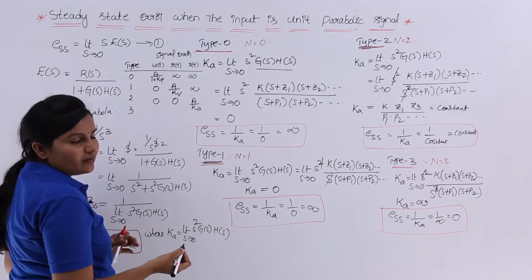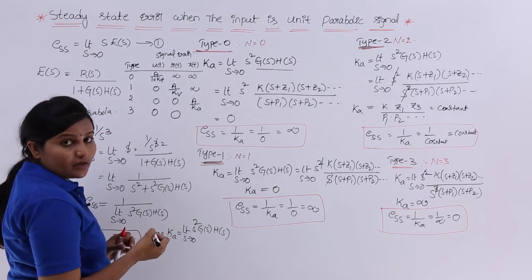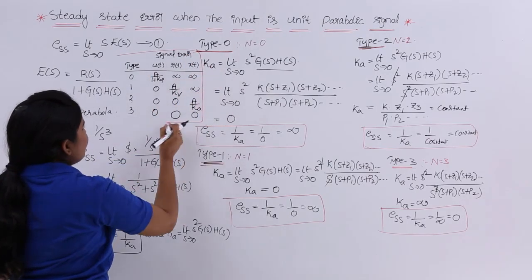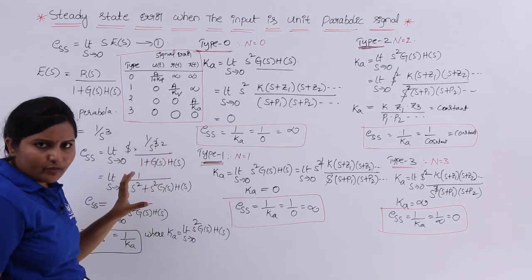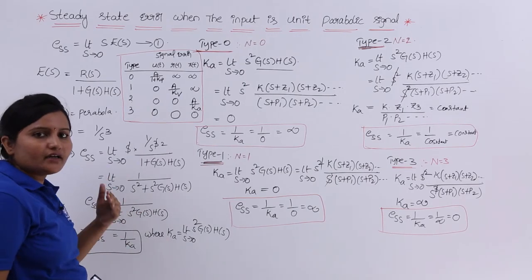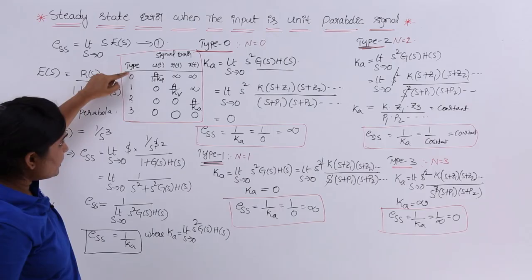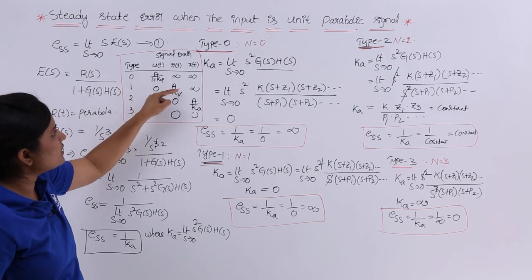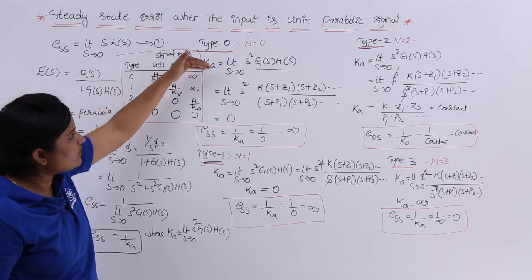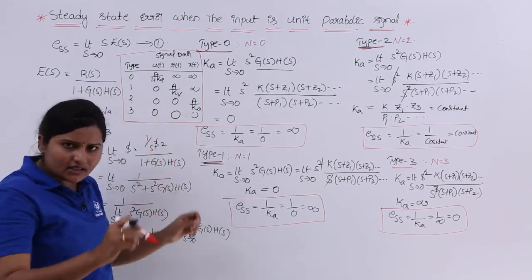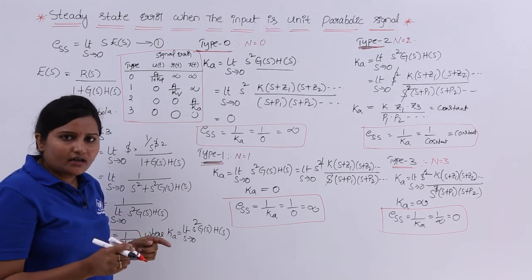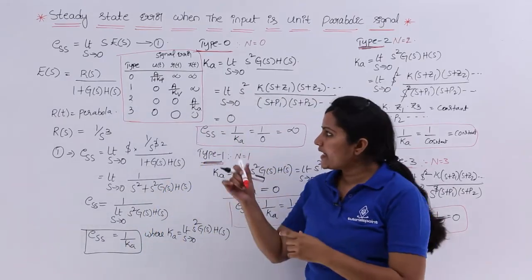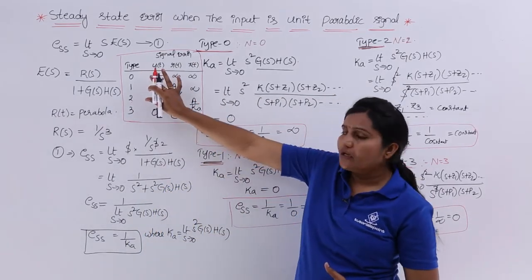This is a very important table to keep in mind. It is a shortcut table to understand steady state error for different types of signals and system types. Along the diagonal you find the steady state error constants; below the diagonal you get all zeros; above the diagonal you get infinity. When given a question, just write this table, trace the given data, and you can get the answer within one minute without doing the total derivation procedure.